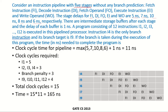There are intermediate storage buffers after each stage and the delay of each buffer is 1 nanosecond. A program consisting of 12 instructions i1, i2, i3 to i12 is executed in this pipelined processor. Instruction i4 is the only branch instruction and its target is i9.